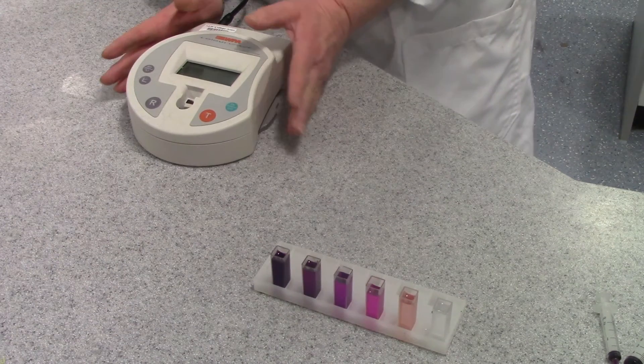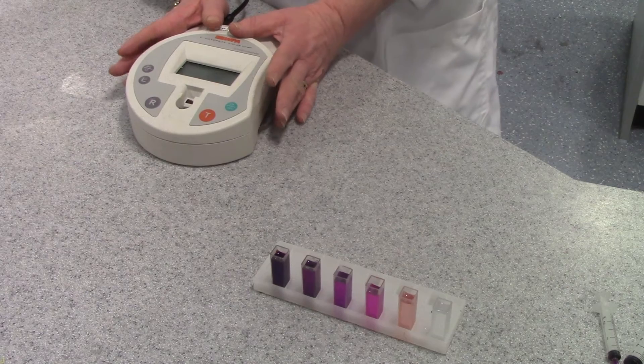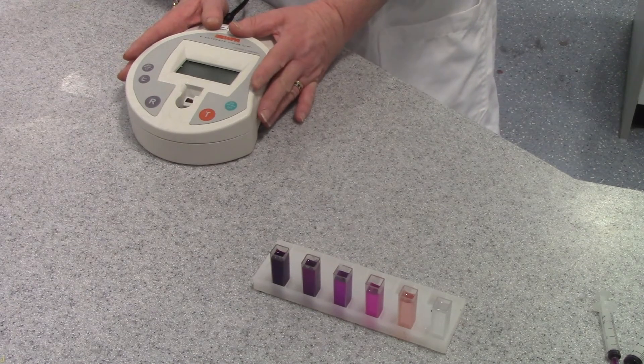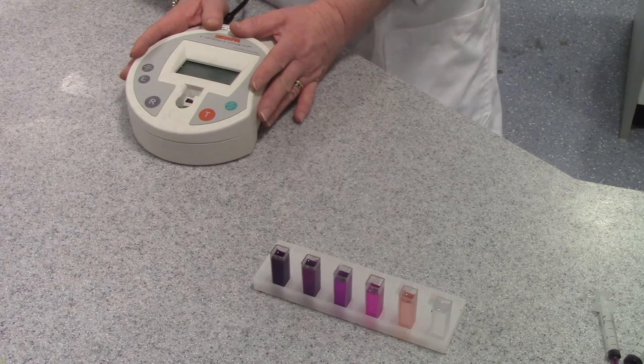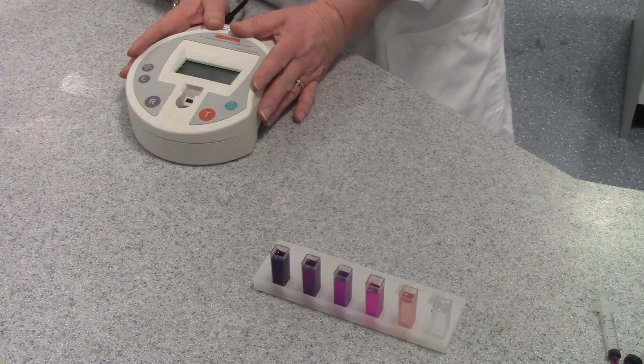This is a colorimeter. It's a piece of equipment that is used in quantitative analysis in order to determine the concentration of a solution. It does this by measuring the amount of light that's absorbed by the solution.